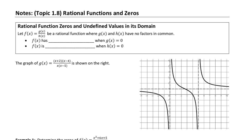A rational function is f(x) equal to g(x) over h(x), where g(x) and h(x most specifically have no factors in common — this is going to be important later. f(x) is going to have a zero where the numerator is equal to zero, giving us x-intercepts. Because you cannot divide by zero, f(x) is undefined when h(x), the denominator, is equal to zero.